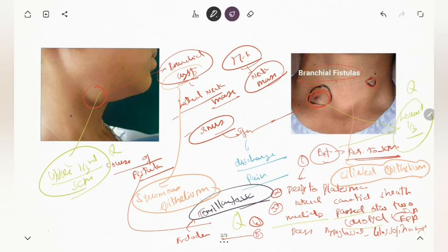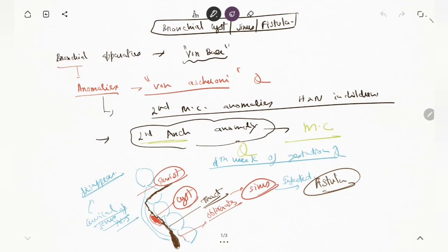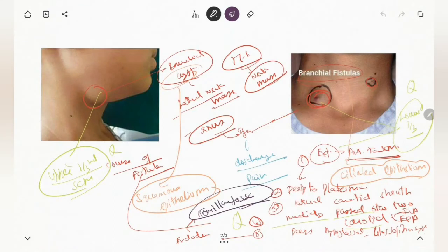The fistula tract opens internally into the tonsillar fossa after breaching the endoderm. This is because the second pharyngeal pouch develops into the tonsil. This is why the internal opening of the branchial fistula is in the tonsillar pillar — the embryology explains it. So the external opening is anterior to the sternocleidomastoid, whereas the internal opening is in the tonsillar fossa.